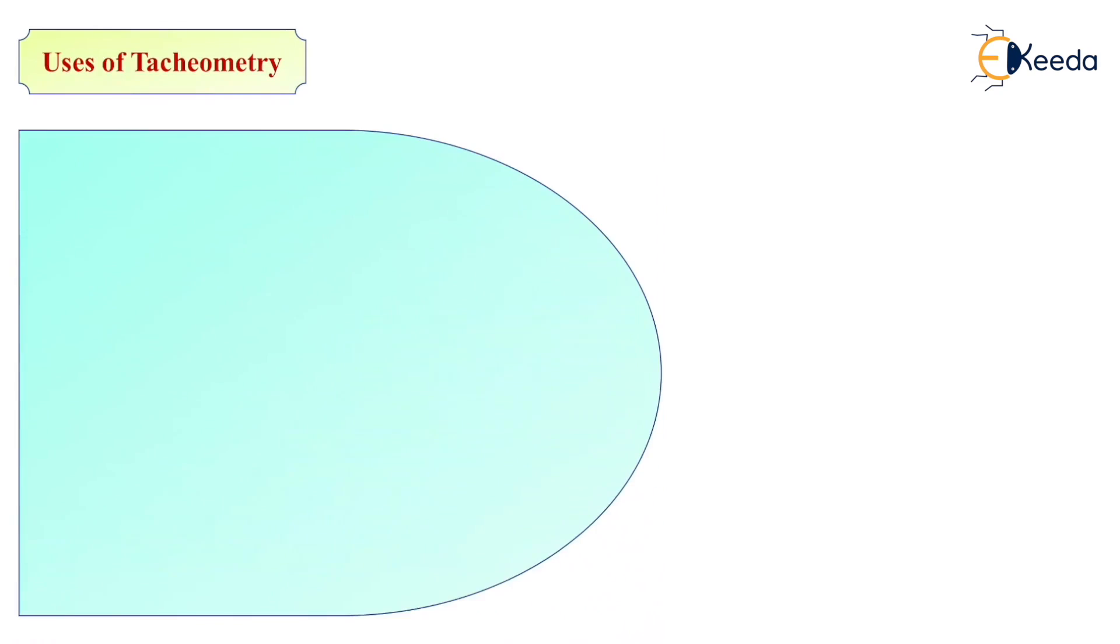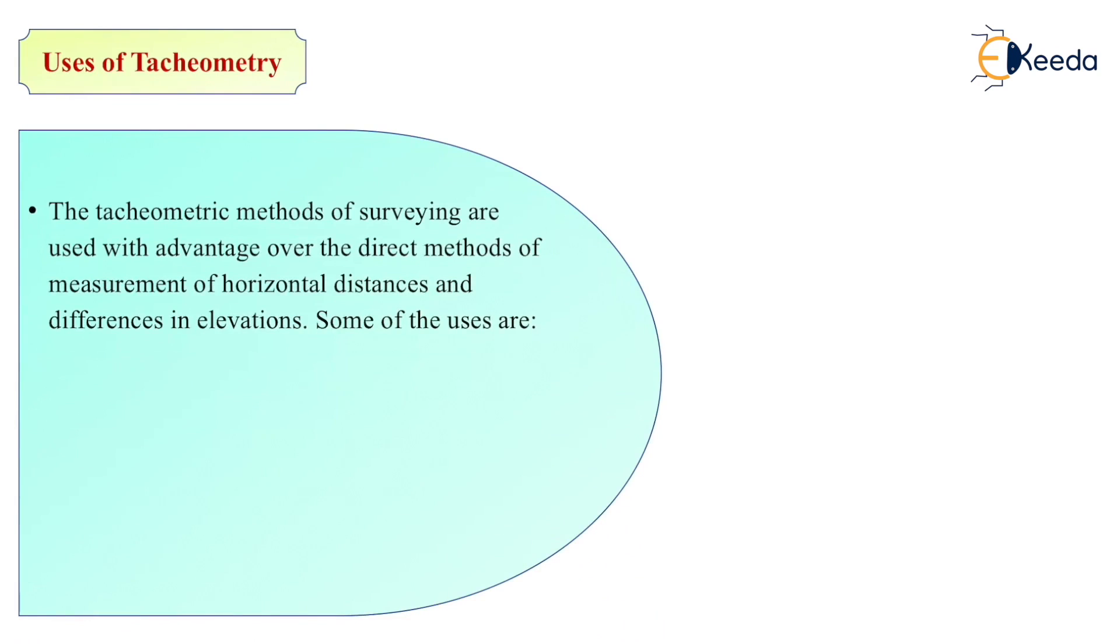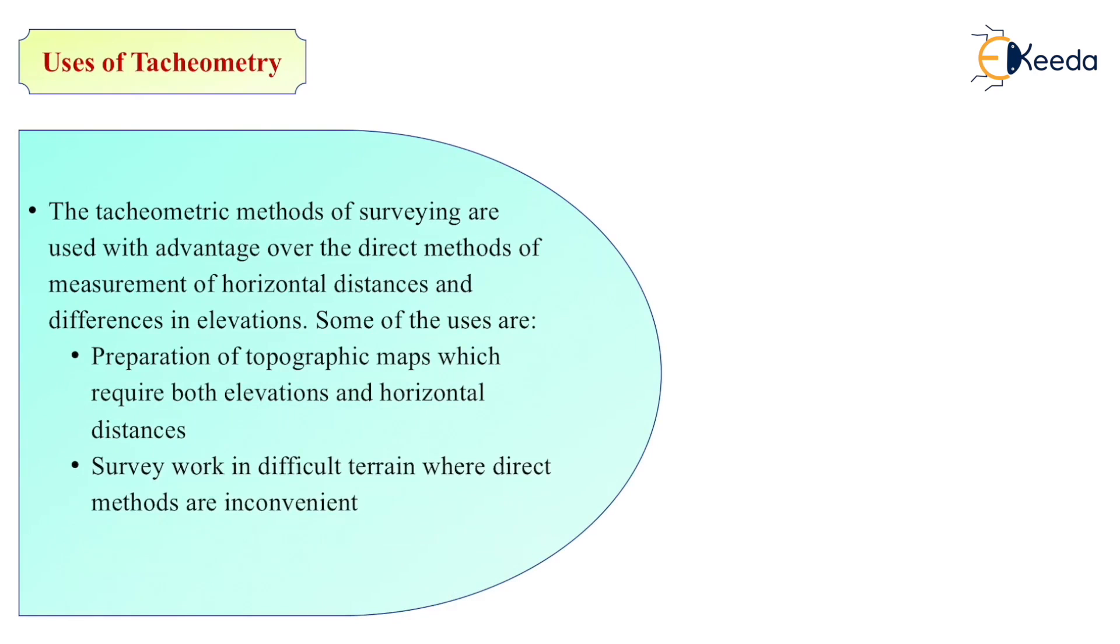The tachometer method of surveying is used with advantages over the direct methods of measurement of horizontal distance and differential elevation. Some of the uses are: preparation of topographic maps which require both elevation and horizontal distance, surveying of difficult areas where direct method is inconvenient such as with tape and chain, and the detailed filling can be calculated by using tachometer.